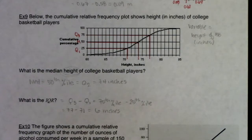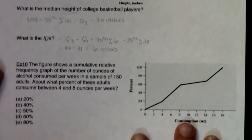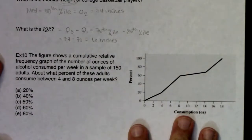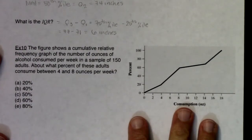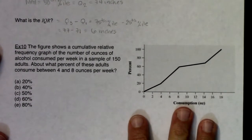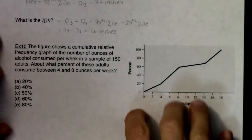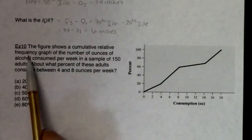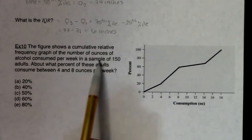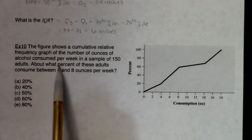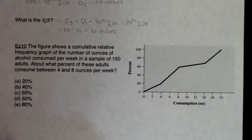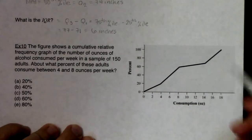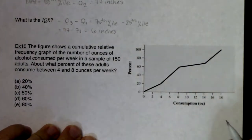I recommend pausing the video and trying example 10 on your own — it's the same concept but phrased a bit differently. It is a multiple choice question. The figure shows a cumulative relative frequency graph of the number of ounces of alcohol consumed per week in a sample of 150 adults. About what percent of these adults consume between four and eight ounces per week? The variable is alcohol consumption in ounces per week.